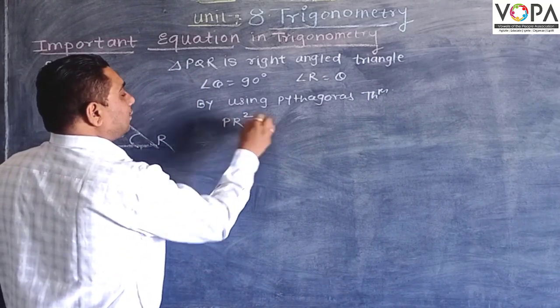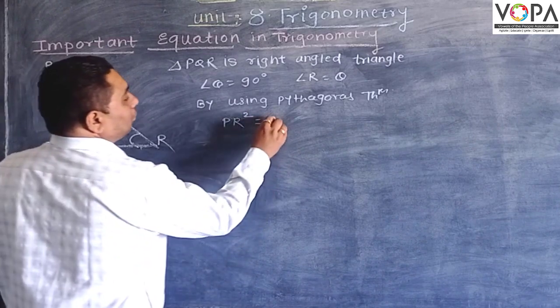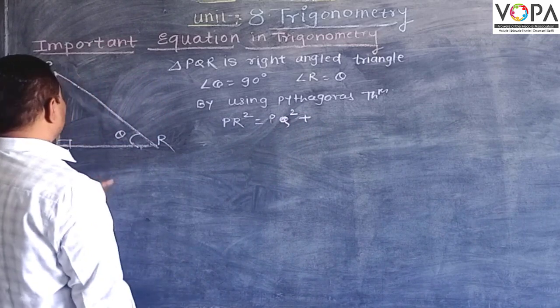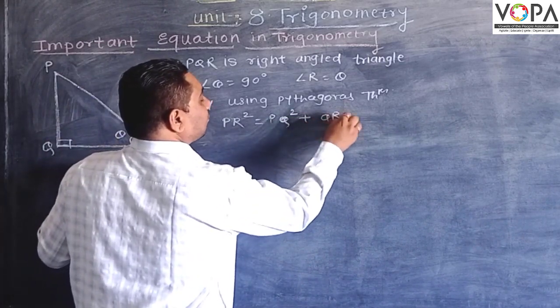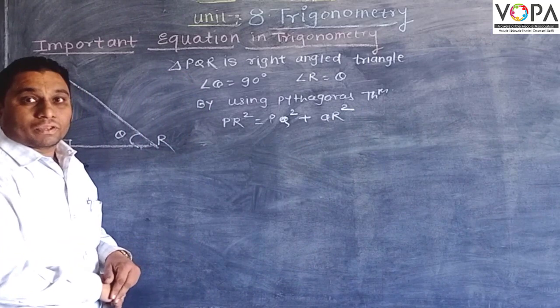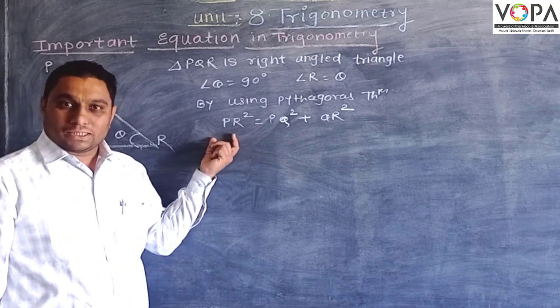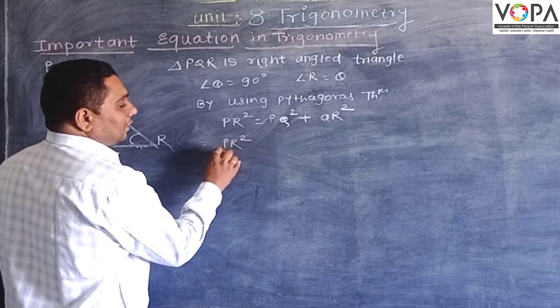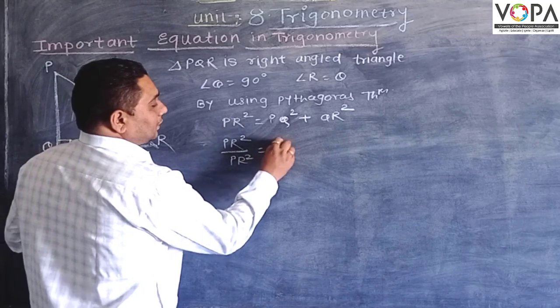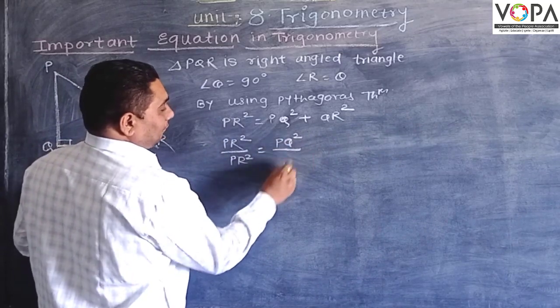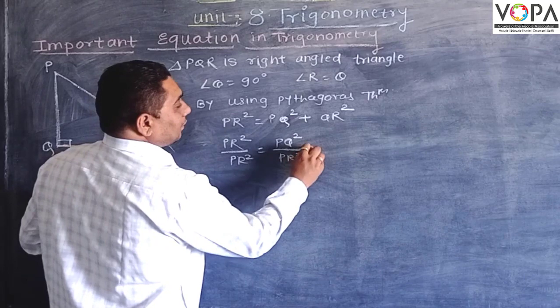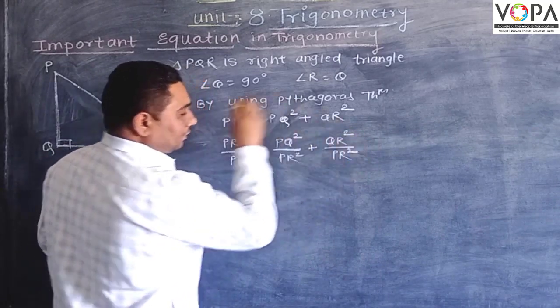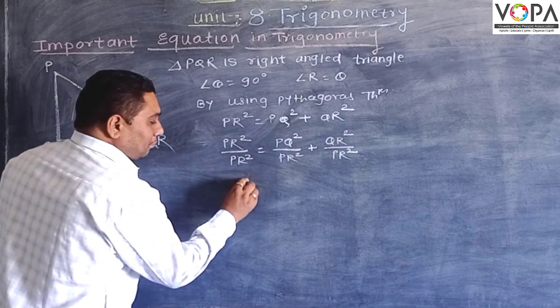plus QR squared. Now here I divide all these terms by PR squared, so PR squared upon PR squared equals PQ squared upon PR squared plus QR squared upon PR squared. Here, PR squared upon PR squared equals 1.